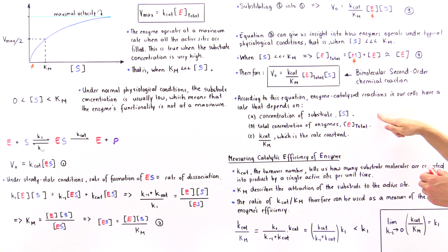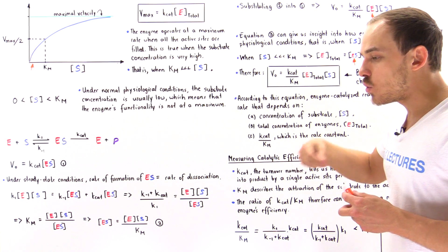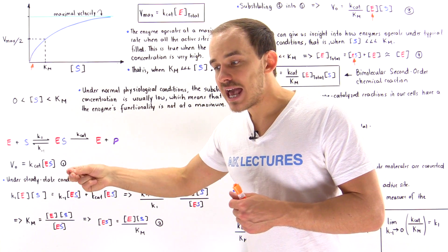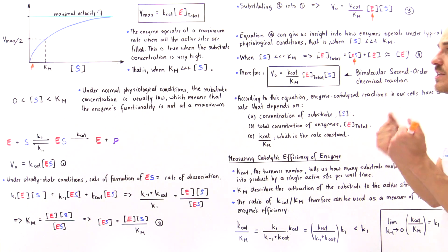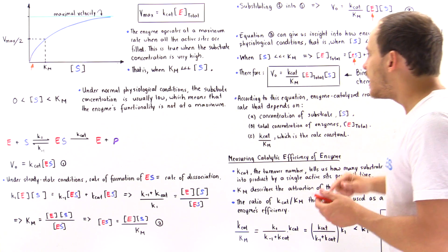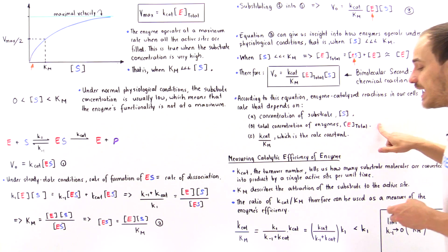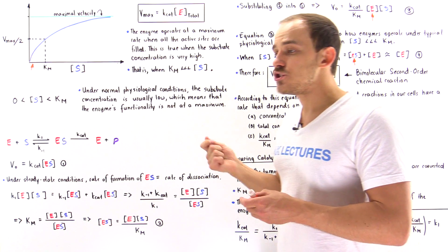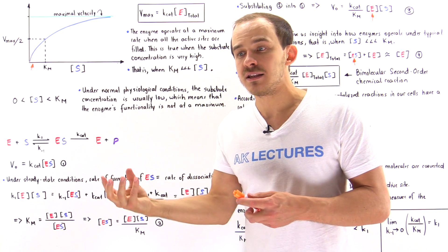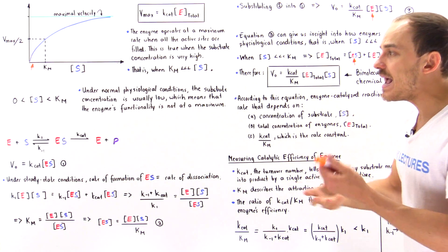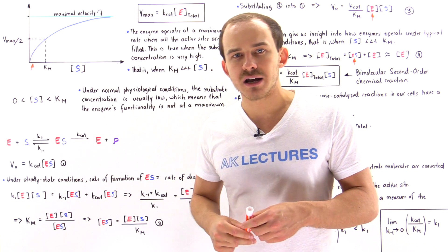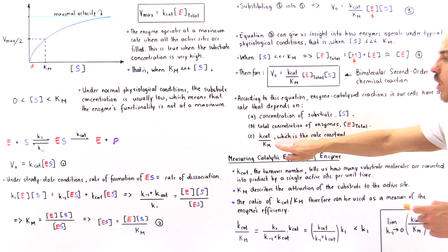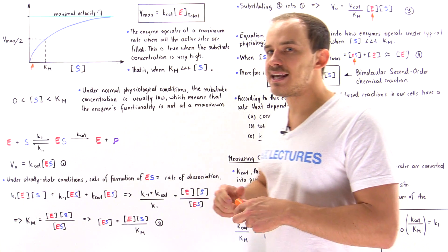Having more substrate makes sense because more substrate will bind on the active site and be transformed into product. Likewise, increasing enzyme concentration gives us more active sites, increasing the likelihood that the substrate will be transformed into product. Finally, what is the meaning behind Kcat divided by Km?